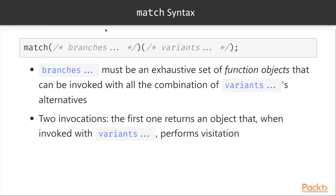This is the syntax that will be provided by match. As you can see, it's not just a single function call but two function invocations, one after each other. The first one takes a bunch of branches, which must be an exhaustive set of function objects that can be invoked with all combinations of the variant's alternatives. The second invocation takes all the variants used for visitation and will actually perform the dispatch.